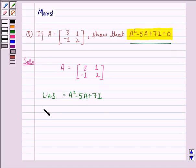That is equal to, now A² will be the matrix [3, 1; -1, 2] multiplied by [3, 1; -1, 2] minus 5 into A,